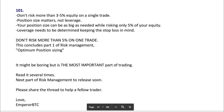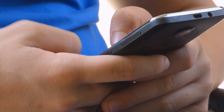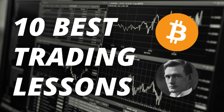So, conclusion of this chapter — Risk Management 101: Don't risk more than three to five percent equity on a single trade. Position size matters, not just leverage. Your position size can be as big as needed while risking only five percent of your equity. Leverage needs to be determined keeping the stop loss in mind. That concludes part one of risk management — optimum position sizing. It might be boring, but it's the most important part of trading.